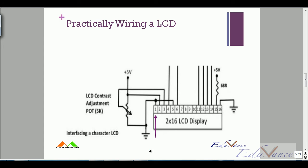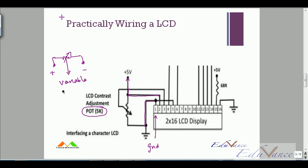Pin number one is connected to ground. Pin number two is connected to the power supply. Pin number three is the center terminal of a potentiometer — a variable resistor where you connect the two extreme terminals to plus and minus, and the center terminal to pin three, which is the contrast pin.